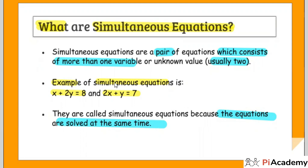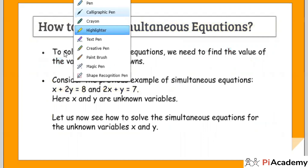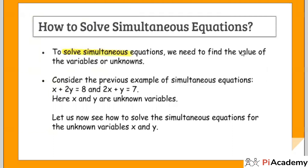Right now we discussed what simultaneous equations are and why we call them simultaneous. How to solve them and what the value of x and y should be — that we will discuss next. Solving simultaneous equations means finding the value of the unknowns, i.e., the variables. The variables can be x, y, or any other two variables.